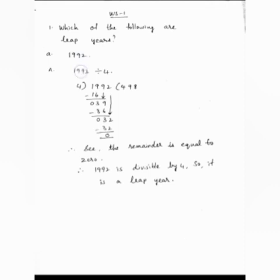First of all, we have to divide 1992 by 4. See children, compared to 4, the first digit is small so we have to take the second digit.